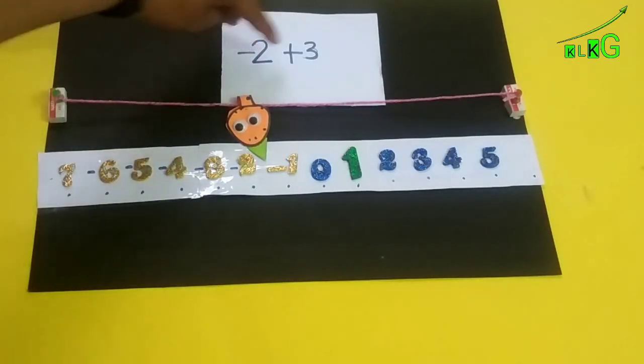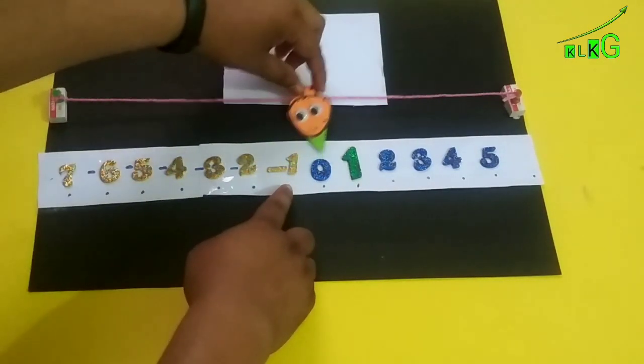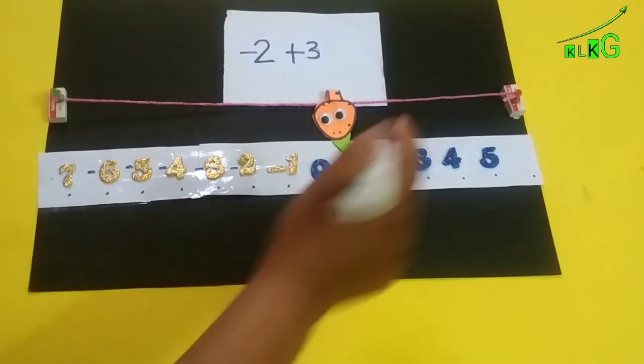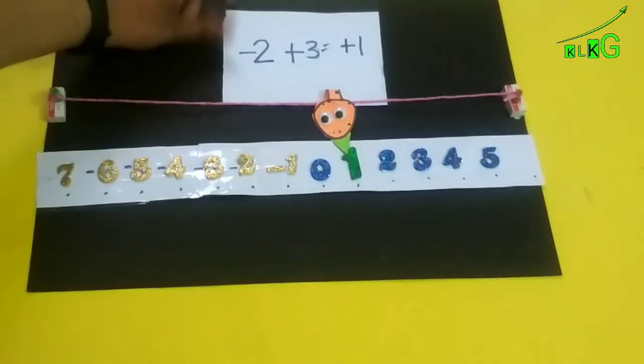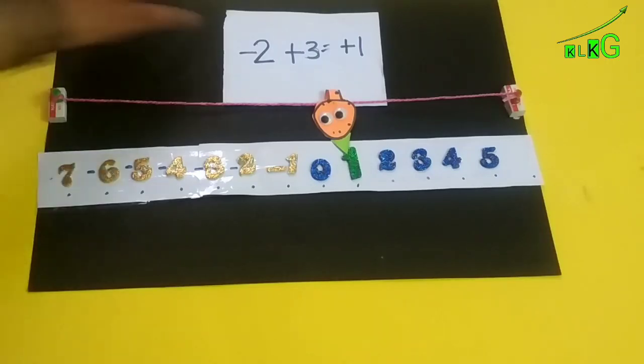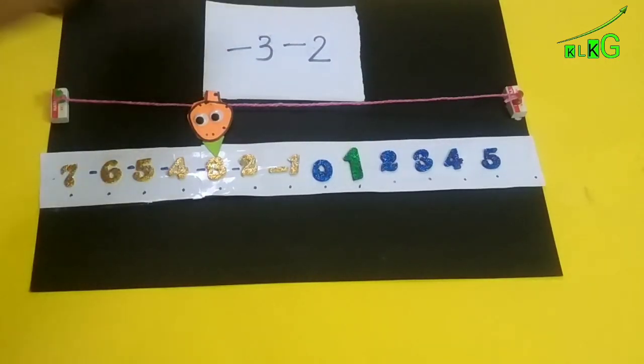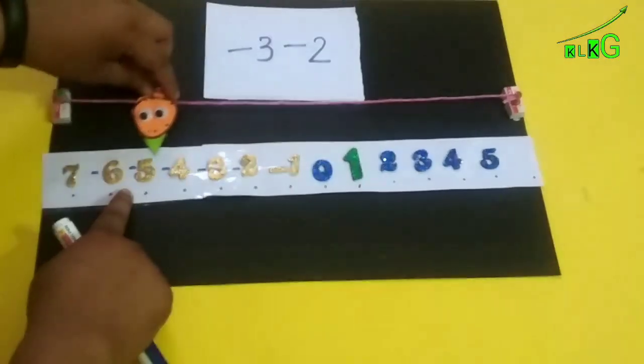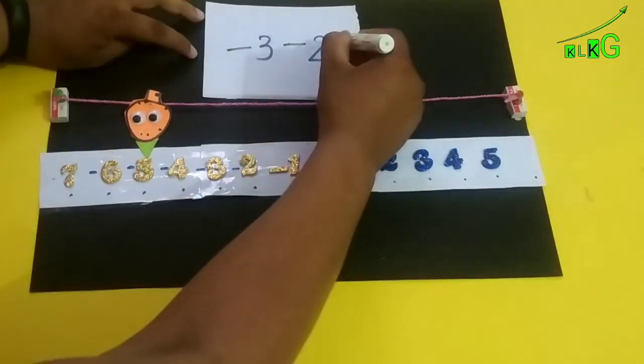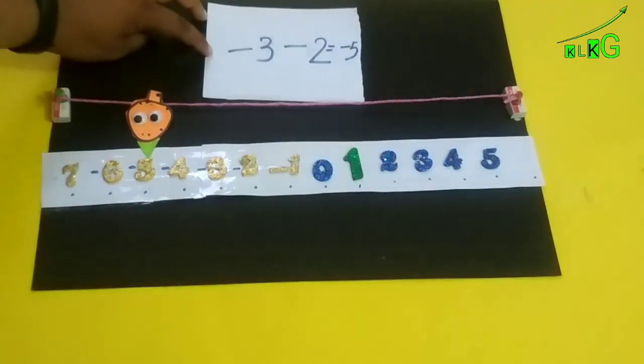Now friends, our simple and easy project is ready. Here is the sum minus 2 plus 3, so we will move 3 steps right, so the answer comes plus 1. Now see the next one: it is minus 3 minus 2, means first from minus 3 we have to move it left side two steps, so the answer is minus 5.